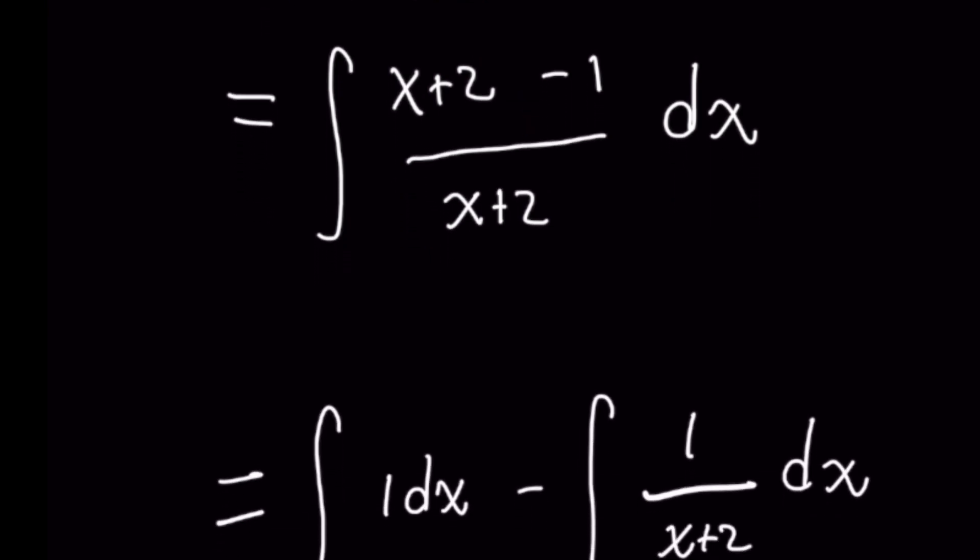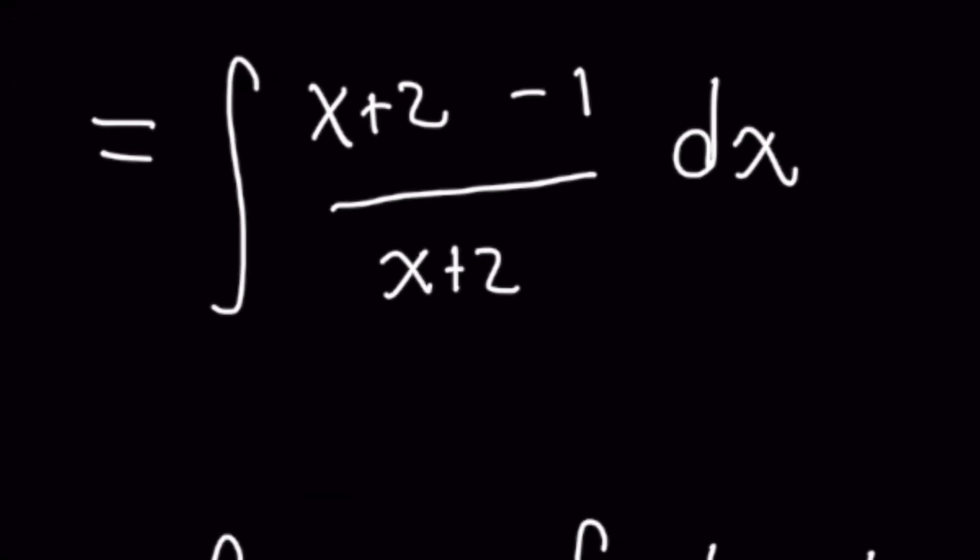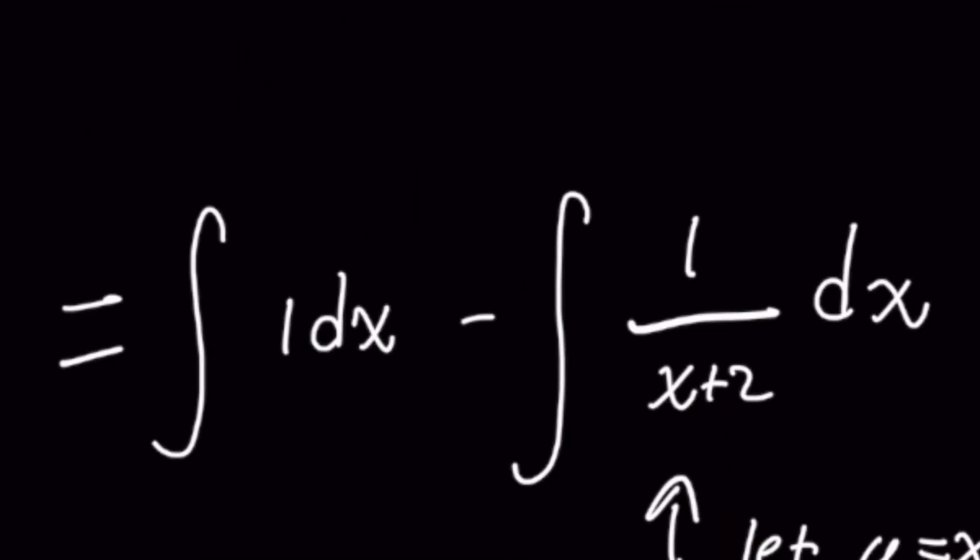So let's go ahead and do this. Let's go ahead and use a little bit of grouping here. So that way we have a difference of two fractions, and for each one, we're going to take the integral. And so for the first left-hand side, you're going to integrate x plus 2 over x plus 2, which is simply 1. That's pretty easy. And on the right-hand side, you're going to integrate 1 over x plus 2.